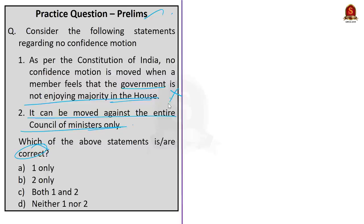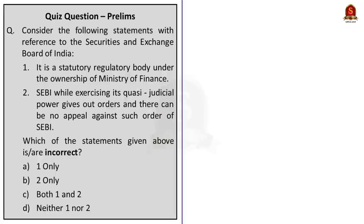The Constitution only says that the council of ministers is responsible to the Lok Sabha. So Statement 1 is incorrect. Statement 2 is correct — the no-confidence motion can be moved against the entire council of ministers only. Therefore the answer is option B, Statement 2 only. The second question is a quiz — find the answer and post it in the comment section.